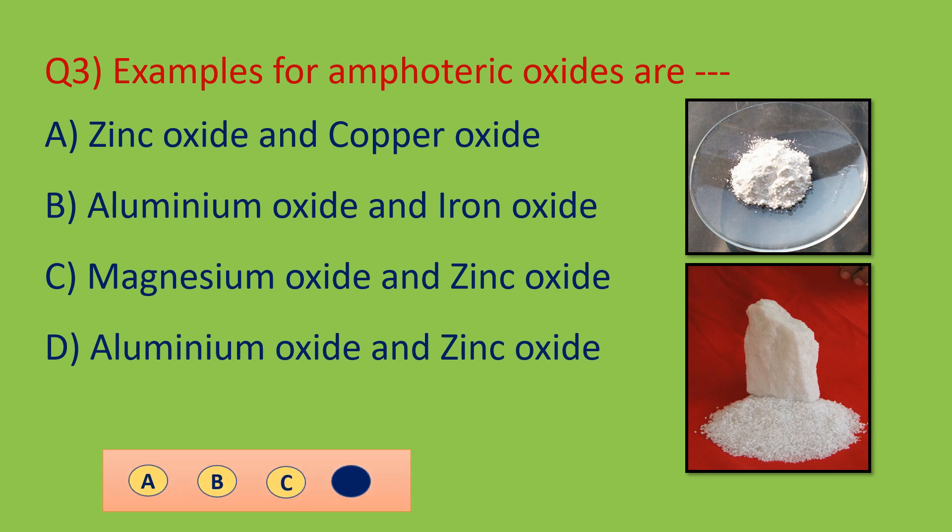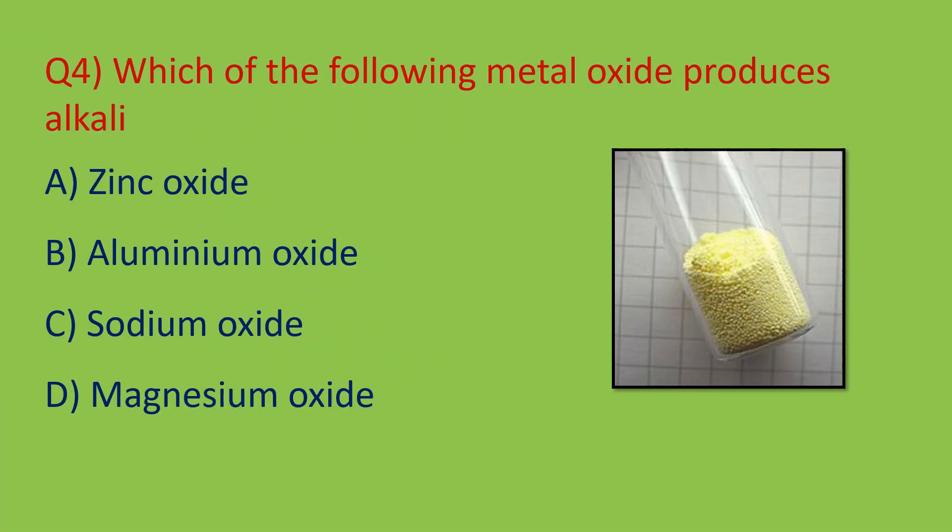You can see images of aluminum oxide and zinc oxide. Question number four: which of the following metal oxides produces an alkali? Alkali means a water-soluble base. Sodium oxide and potassium oxide, when dissolved in water, produce bases which are alkalis. Out of the four options, option C — sodium oxide — is the right answer, as it dissolves in water to produce a water-soluble base.